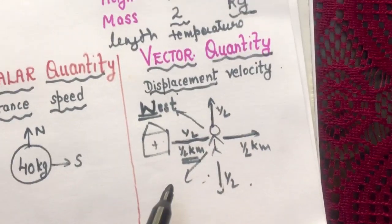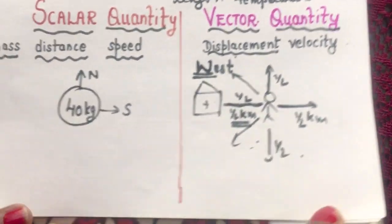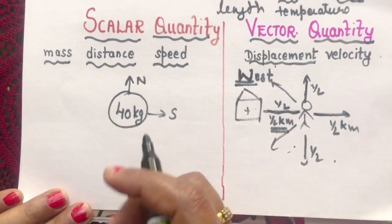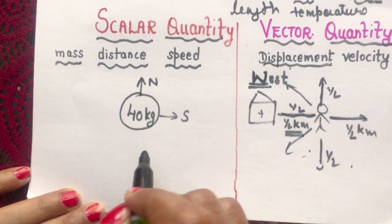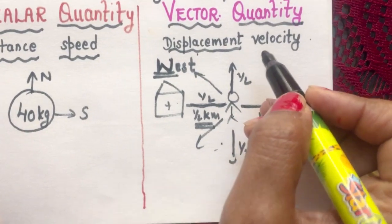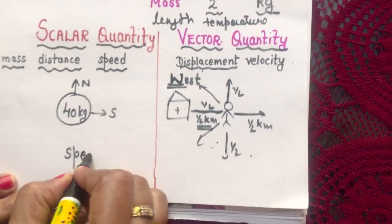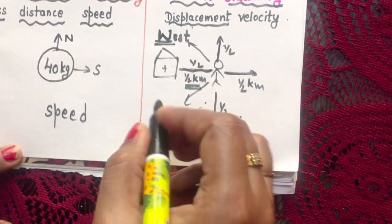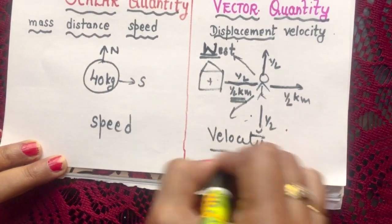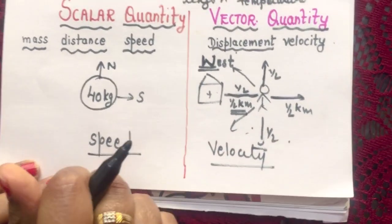So displacement is a vector quantity. Just remember that anything for which you are requiring to specify the direction, then that quantity is your vector quantity. For example, how fast you are moving is speed. How fast you are moving in a particular direction is velocity. So velocity is a vector quantity and speed is a scalar quantity.